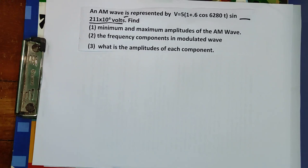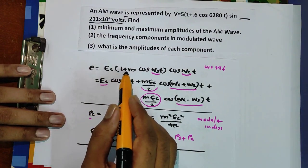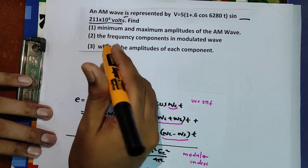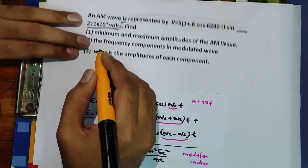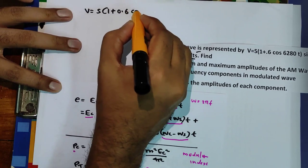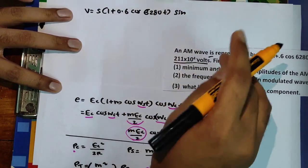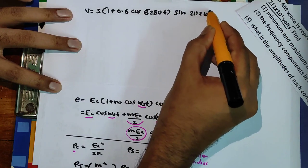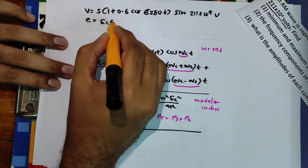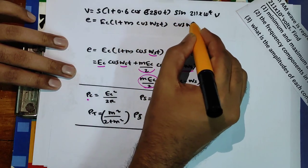We compare this with the standard instantaneous voltage equation E = Ec(1 + m·cos(ωs·t))·cos(ωc·t). The given voltage is v = 5(1 + 0.6·cos(6280t))·sin(211 × 10⁴ t).